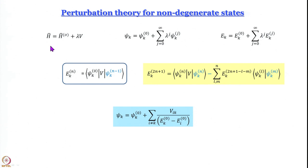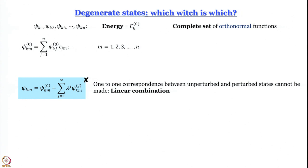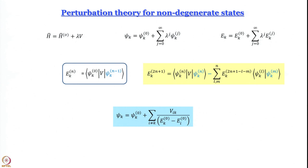First, we write the Hamiltonian as the unperturbed Hamiltonian plus a perturbation term. The form we are dealing with is: the Hamiltonian of the perturbed system equals the unperturbed Hamiltonian plus λV, where V is the perturbation potential and λ is a parameter we can regulate to increase or decrease the amount of perturbation. Lambda appears in the expression for the corrected wave function: ψ_km equals ψ_km⁰ plus the sum over j from 0 to infinity of λ^j times ψ_k^(j), and a similar expression holds for the energy.